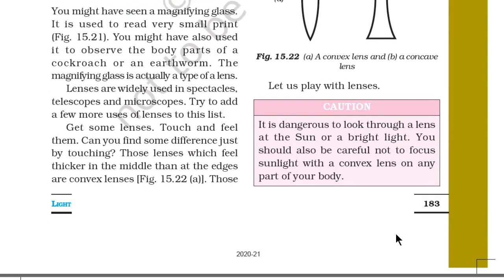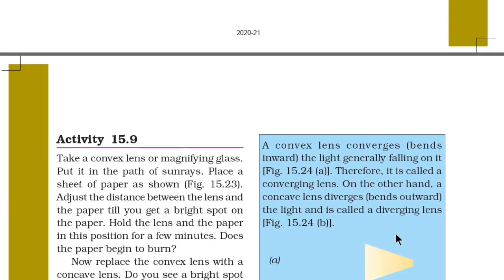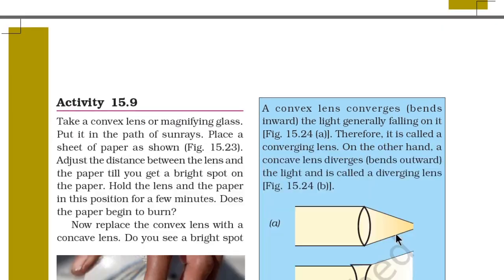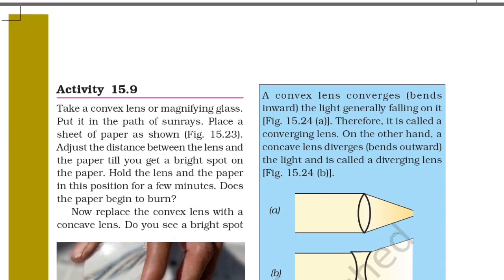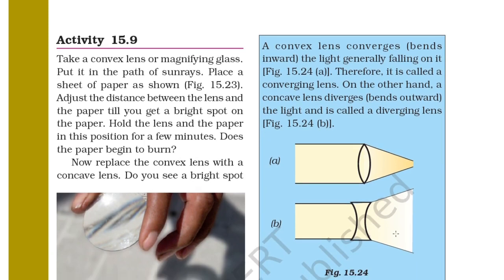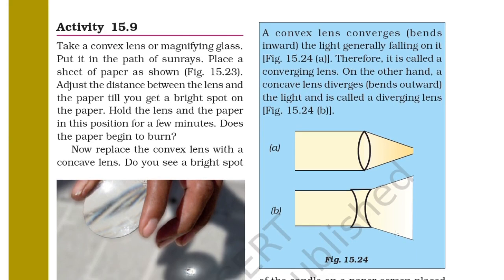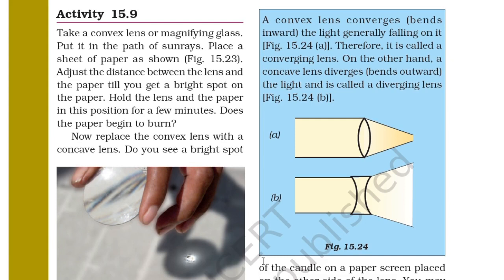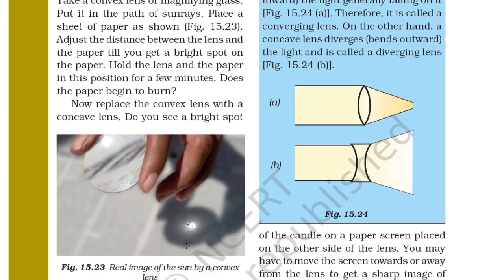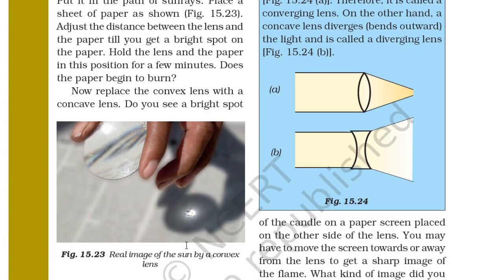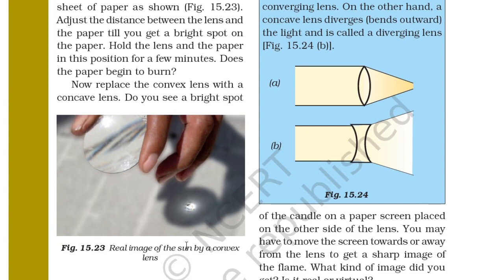Let us play with lenses. A word of caution: it is dangerous to look through a lens at the sun or a bright light. You should also be careful not to focus sunlight with a convex lens on any part of your body — it may be dangerous. In Activity 15.9, take a convex lens or magnifying glass. Put it in the path of a sun ray and place a sheet of paper as shown in figure 15.23. Adjust the distance between the lens and the paper until you get a bright spot on the paper. Hold the lens and paper in this position for a few minutes — does the paper begin to burn? Now replace the convex lens with a concave lens. Do you see a bright spot on the paper this time?